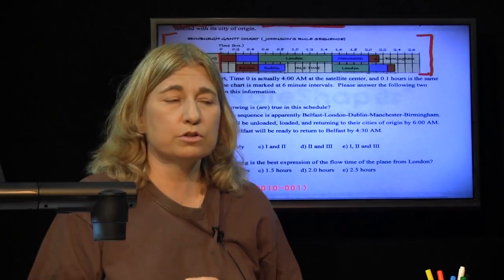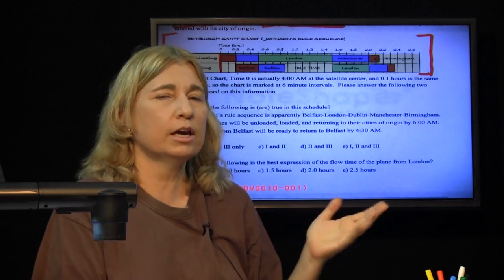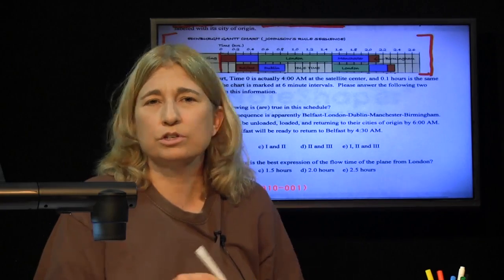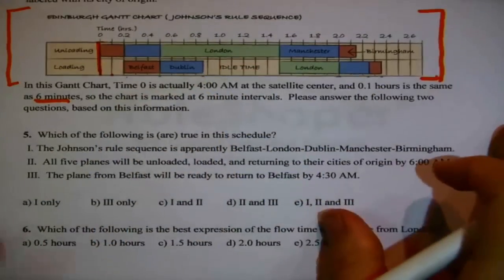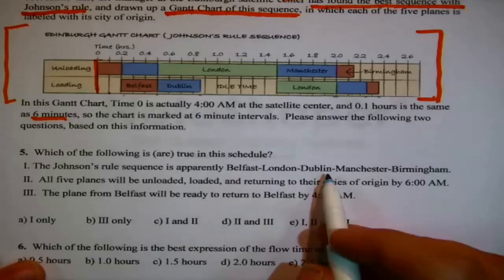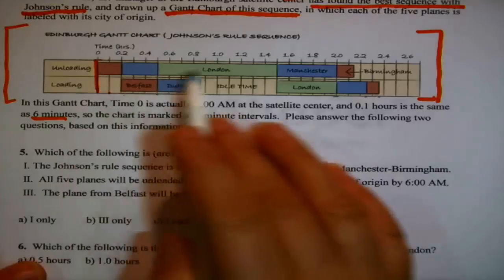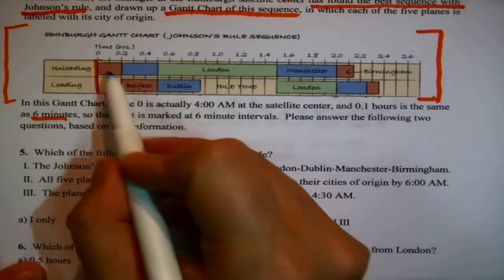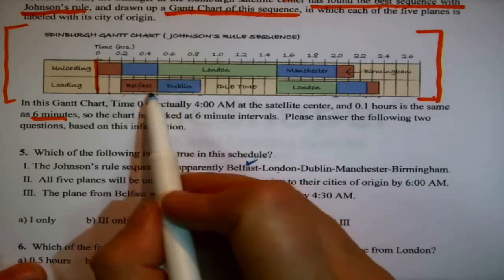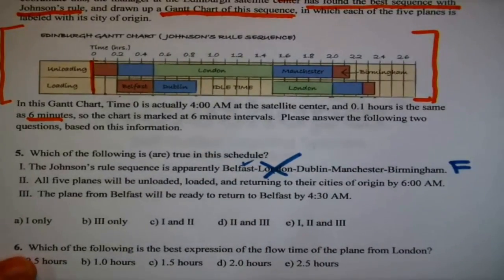This is a Johnson's rule problem that is already done, thoroughly done. The sequence has been found and the Gantt chart's already been drawn. So what are we supposed to do is just interpret it. Which of the following is or are true about this schedule? The Johnson's rule sequence is apparently, from this, Belfast, London, Dublin, Manchester, Birmingham. Well, if that were true, then we would see them scheduled in that order from left to right. I do see that Belfast, see how Belfast is first? London, however, who is this in blue next box? No, the next box here is Dublin. We don't have to check it any further. It failed right there. That can't possibly be true.